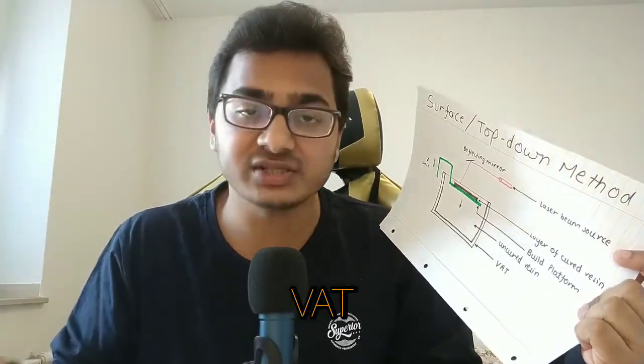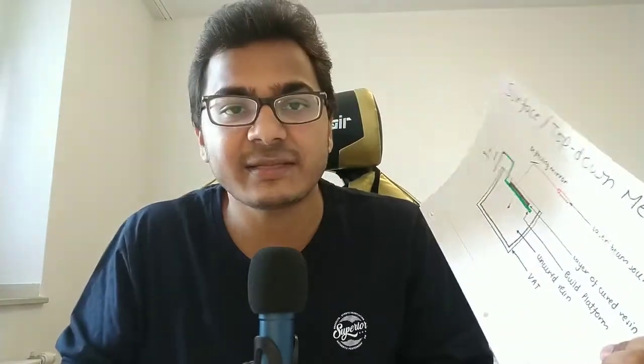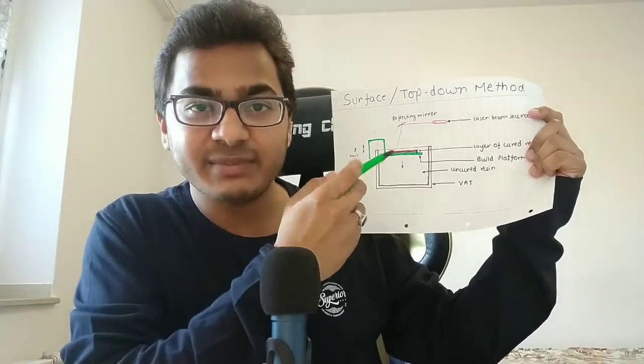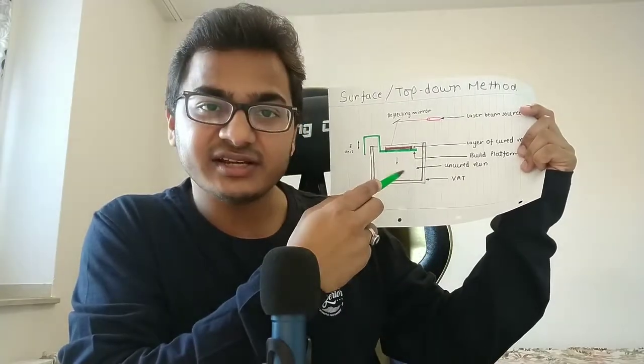If you remember from my video on VAT polymerization, the exact definition of vat is that it's a large tank or tub used to hold some form of liquid, especially in industries. The reason it's called the top-down method is that at the beginning of the process, the build platform is at the top or topmost surface.